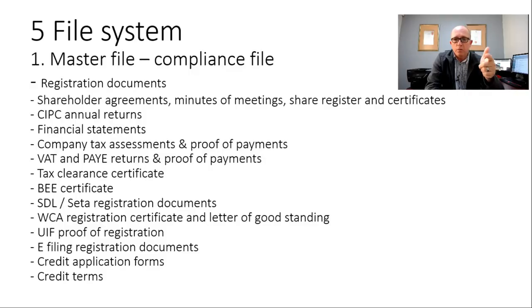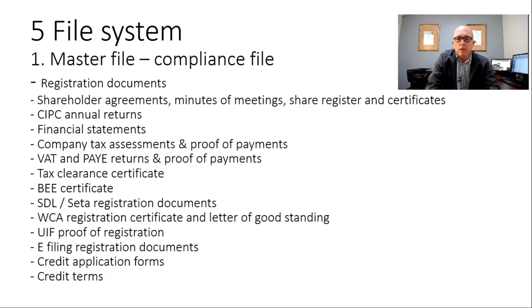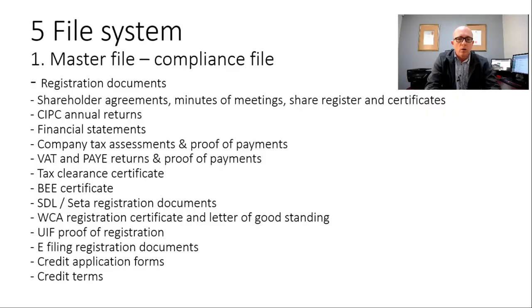Next in the master file: company tax assessments and proof of payments. Once you submit your company tax return, the receiver of revenue gives you a tax assessment — keep that copy together with proof of payment if you made any payments on your tax returns. Also your VAT and PAYE returns and proof of payments. Although these days if you've got access to e-filing you'd have copies there, it's always nice to have a hard copy on file as well.